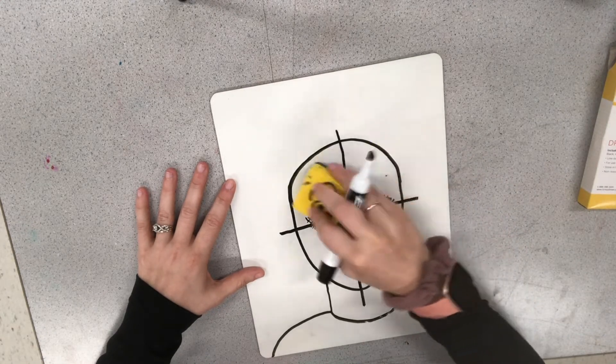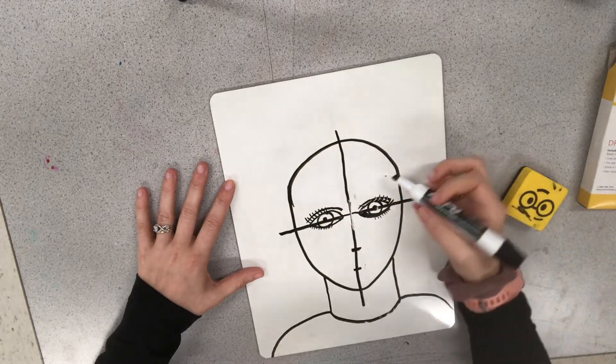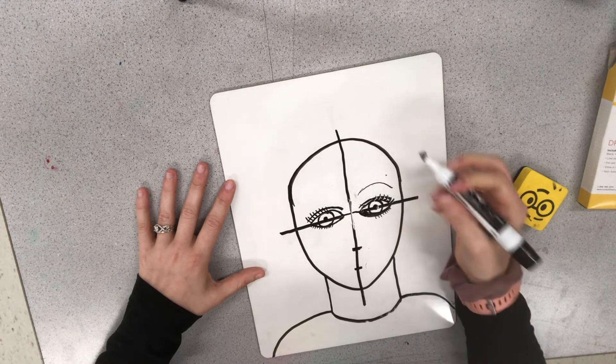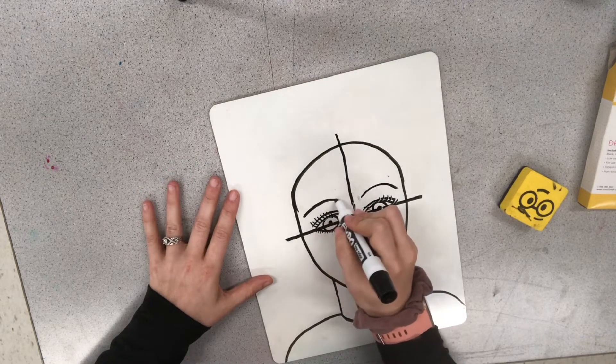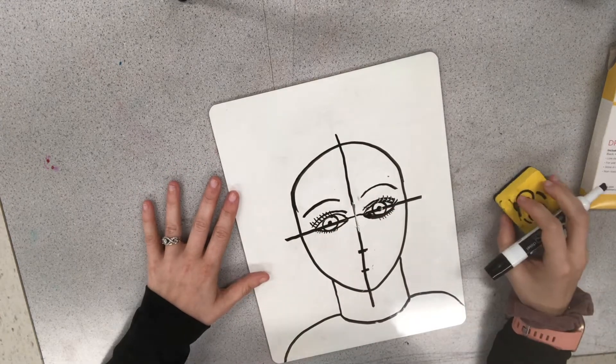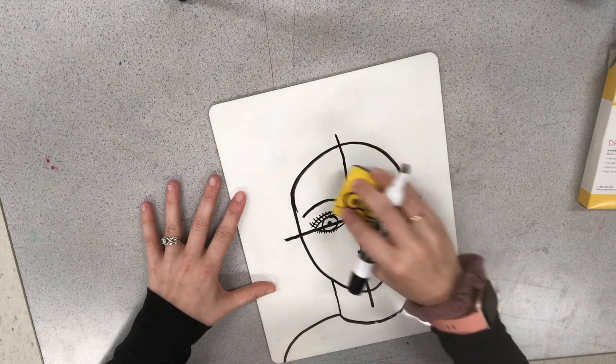And now we are going to make eyebrows about down here. So it can either be an arch above the eye like this with just one line. Or you can get a little fancier.